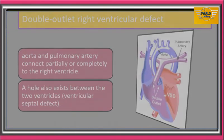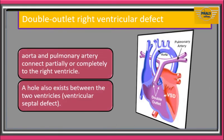Double outlet right ventricular defect: in this defect, the aorta and pulmonary artery connect partially or completely to the right ventricle. Usually, a hole exists between the two ventricles.